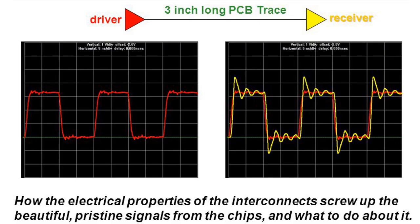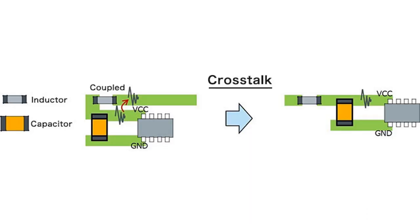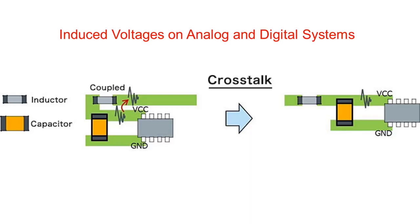At the higher frequencies, traces on your PCBs begin to become more effective at receiving energy from electric fields. The field can induce voltages on both analog and digital signals, so you can imagine that there is a host of issues that this can cause.